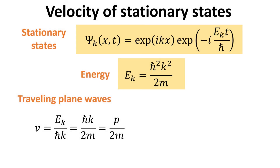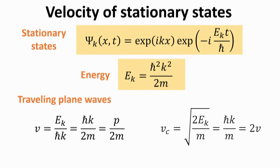We can compute the velocity of our stationary states. Since these are traveling plane waves, their velocities are given by the ratio of the coefficient of time t over the coefficient of position x in the complex exponentials. This velocity v is also called the phase velocity. However, we note that the phase velocity is not the same as the classical definition of velocity vc, as given by the Newtonian definition of kinetic energy E equals half mv squared. In fact, the classical definition of velocity will yield us twice the velocity of our stationary states. We shall revisit this point later in the video.